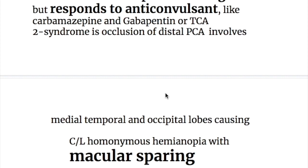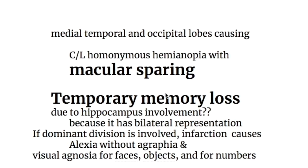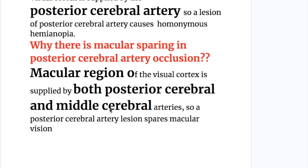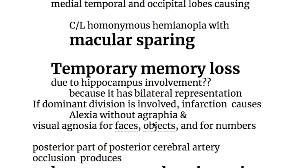The second syndrome is due to occlusion of the distal posterior cerebral artery, which supplies the medial temporal and occipital lobe, causing contralateral homonymous hemianopsia with macular sparing. Macular region of the visual cortex is supplied by both posterior cerebral and middle cerebral artery branches, so a posterior cerebral artery lesion spares macular vision. There is also temporary memory loss due to hippocampal involvement, and it is temporary because memory has bilateral representation.